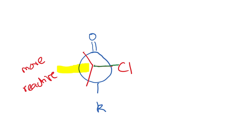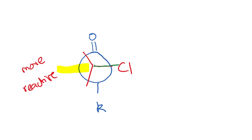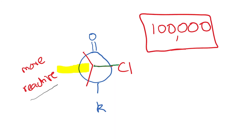This stabilization happens when the carbon-chlorine bond is perpendicular to the carbonyl, to maximize the orbital interaction. When the carbon-chlorine bond is perpendicular to the C double bond O, the attack on this carbon happens in a much faster way because this arrangement is more reactive. Of the various conformations, this conformation is the most reactive and its rate of reaction is substantially higher than the other conformations. This is how we understand the 100,000-fold increase in rate of the nucleophilic substitution reaction.